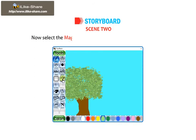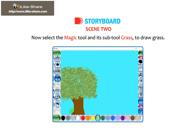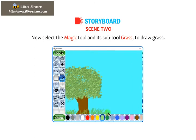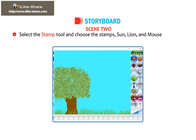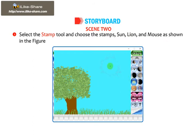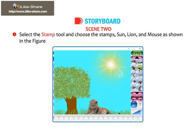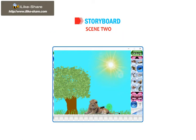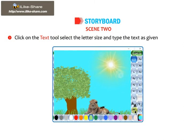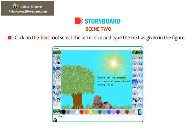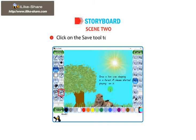Now, select the Magic tool and its sub-tool grass to draw grass. Select the Stamp tool and choose the stamps Sun, Lion, and Mouse as shown in the figure. Click on the Text tool, select the letter size and type the text as given in the figure. Click on the Save tool to save the drawing.